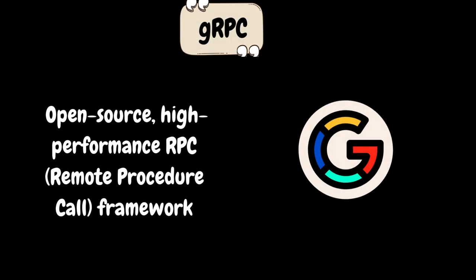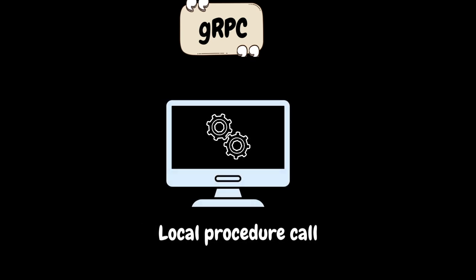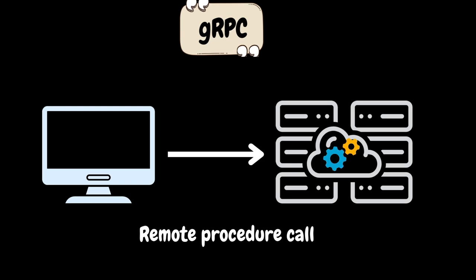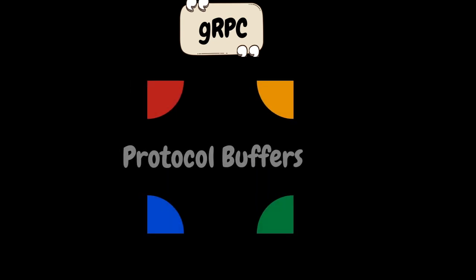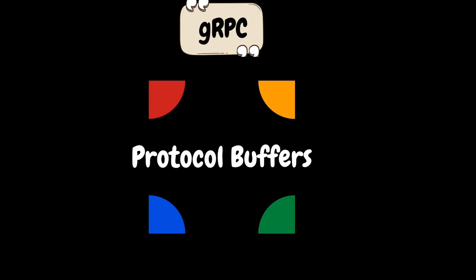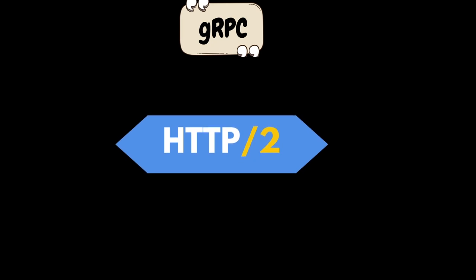Next is gRPC, an open-source high-performance RPC framework initially developed by Google, where RPC means Remote Procedure Call. A local procedure call means calling a procedure or function within the same program without any network communication. A remote procedure call means calling a procedure or function on a remote system and receiving the results. The core of gRPC is Protocol Buffers, which simplify how different parts of an application communicate by providing a structured and efficient method for defining and exchanging data. gRPC uses HTTP/2 as its underlying transport protocol. One significant improvement in HTTP/2 is multiplexing, allowing multiple requests and responses to be sent in parallel over a single TCP connection, reducing latency and improving overall performance.